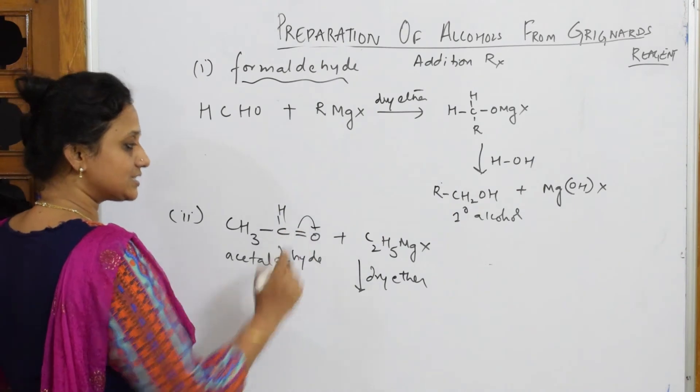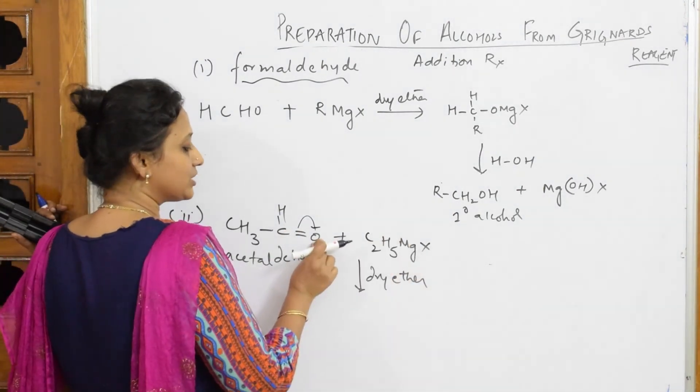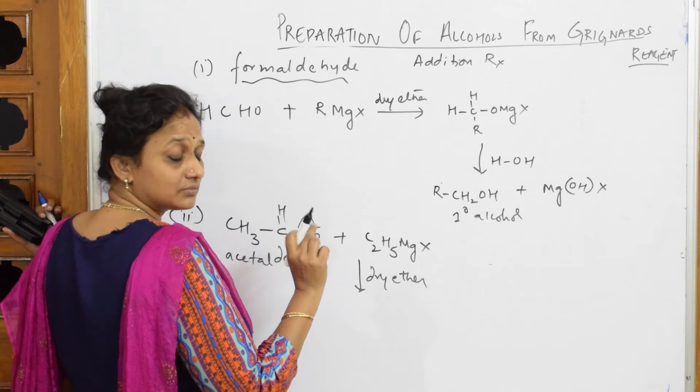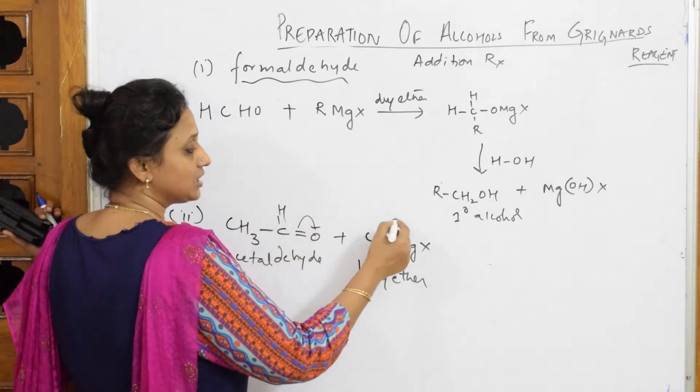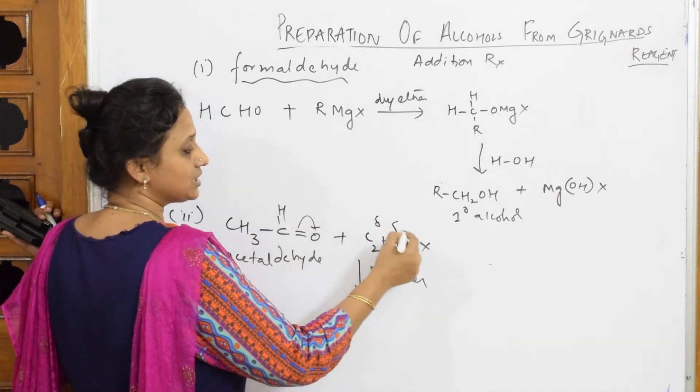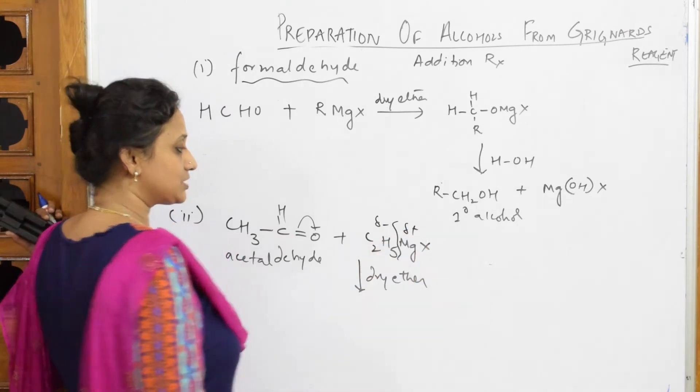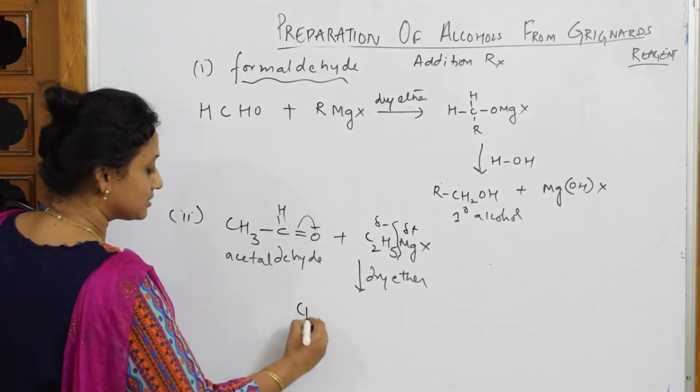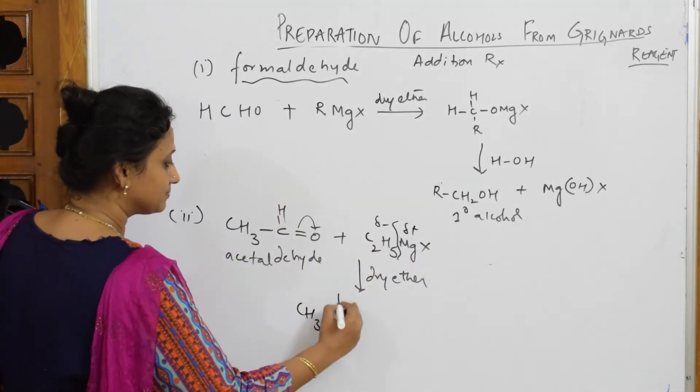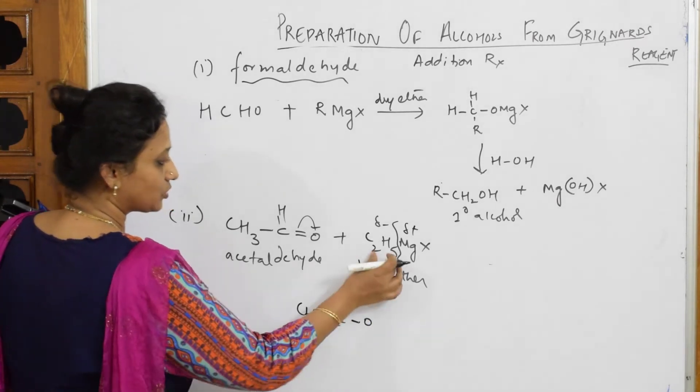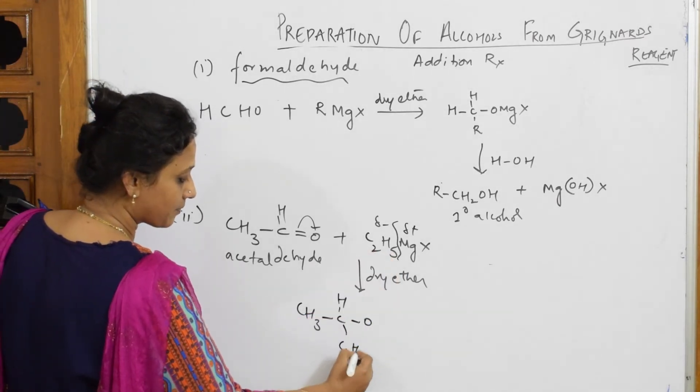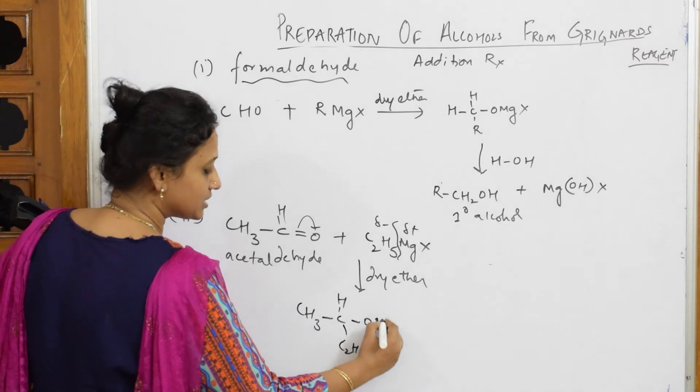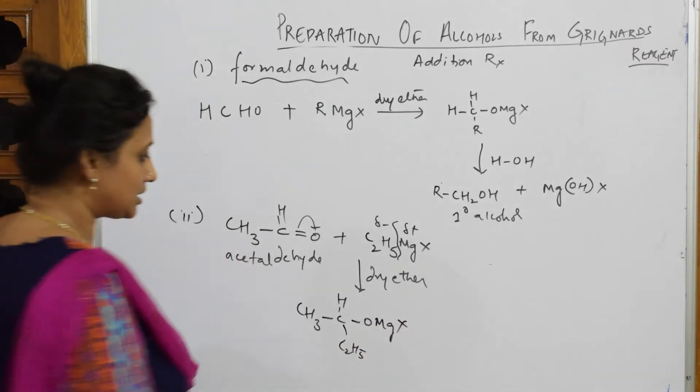So now observe carefully. This goes here. What did I say? Always MgX goes and adds to electronegative atom oxygen. We have already seen charge separation. This breaks up. This gets partial negative charge, this gets partial positive. So what product do I get? CH3C, now this whole group comes here, OMgX. My product is still not done. I have to hydrolyze it to get alcohol further.